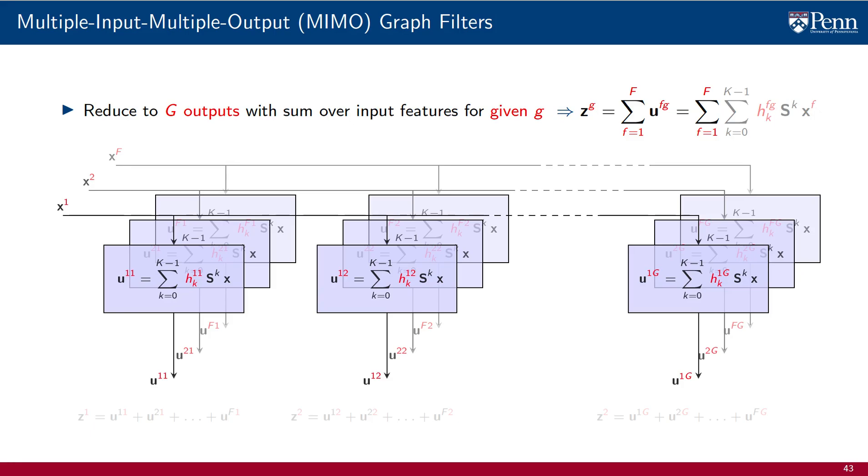Using this MIMO filter in a GNN where we want to stack layers would lead to exponential growth in the number of features. This is not necessarily undesirable, but to exercise more control on the number of output features, we reduce the number of outputs to capital G by summing across input features for a given G. In the diagram below, moving from left to right, we vary output features and moving from front to back, we vary input features.